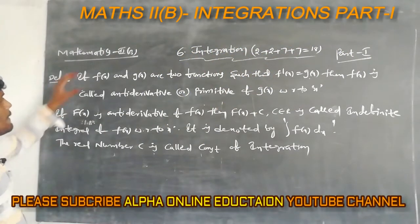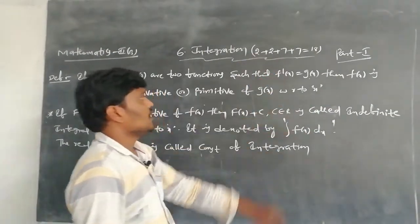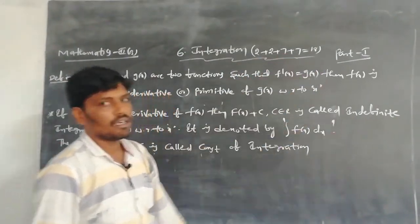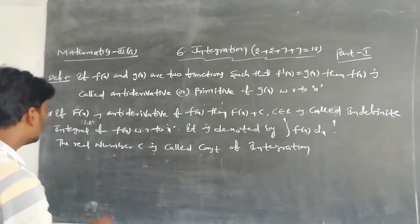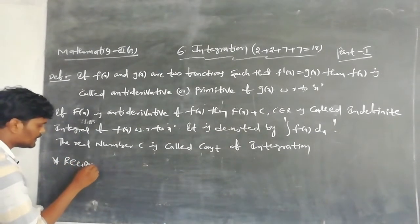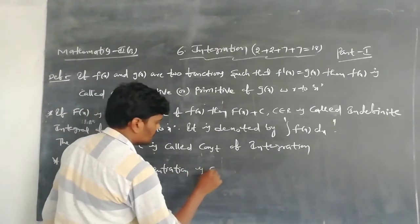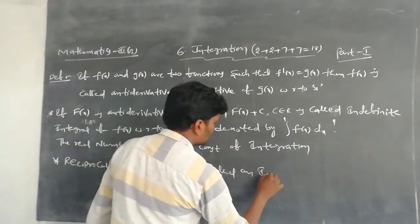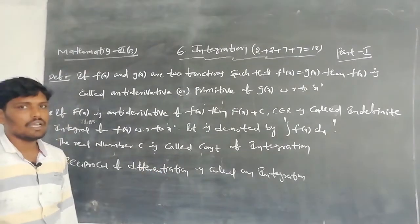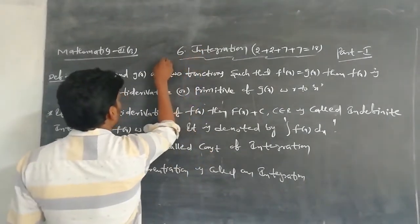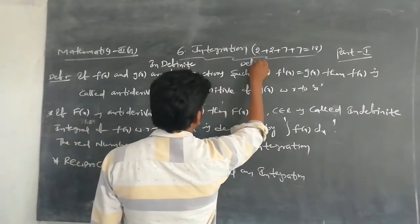Good afternoon everybody. Today we discuss Mathematics 2B, Integration, Chapter Number 6. Integration has a total of 18 marks. This is Part 1. Today we discuss the introduction of integration. Integration is nothing but the reciprocal of differentiation, also called the reverse process of differentiation. Integration are two types: number one, indefinite integration; number two, definite integration.